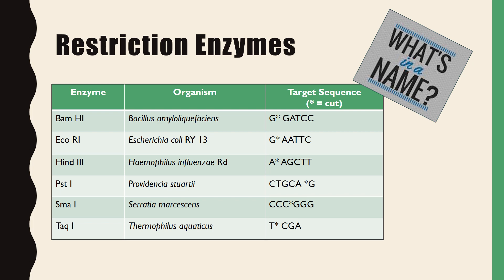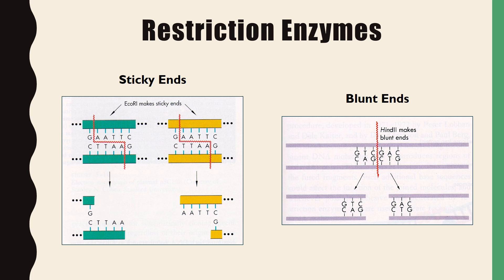EcoRI cuts produce strands with sticky ends — overhangs or free sections of the DNA strand. On the green strand the TTAA sequence is the sticky end, and the yellow strand has the AATT sticky end. HIND-2, which targets GTCGAC and cuts between GTC and GAC, leaves blunt ends with no overhanging sections. These concepts will come up throughout the semester in molecular testing.